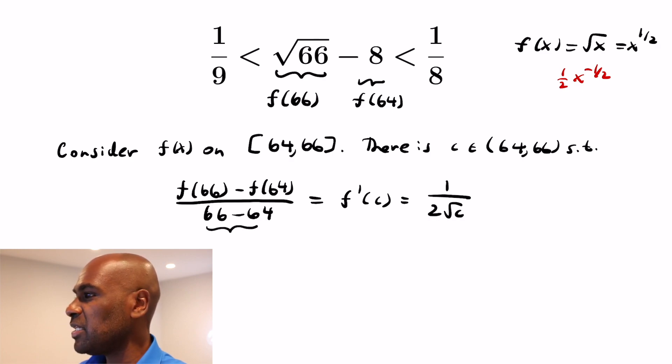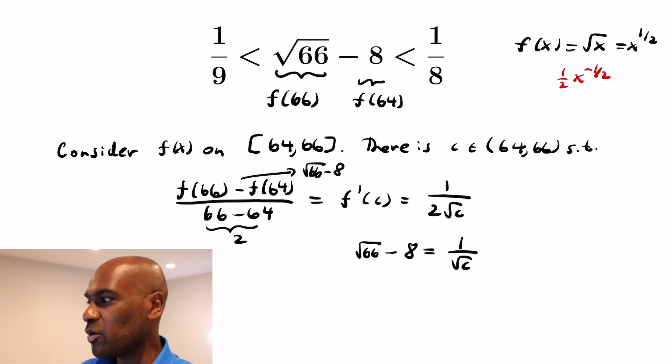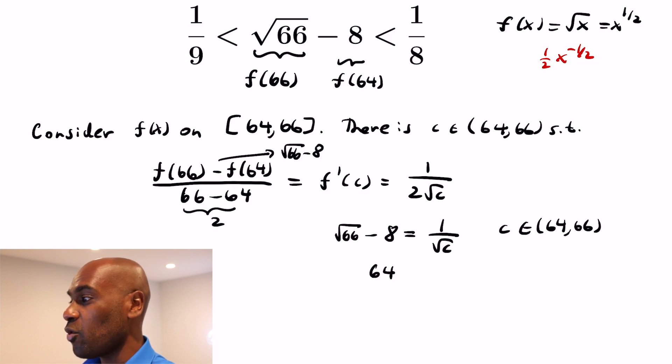Okay so let's piece all these things together. In the denominator we have a 2 in this fraction on the left. The numerator is the thing that we're actually interested in bounding above and below. It's √66 - 8. Now we're left with this 1/(2√c). But we know that this quantity √66 - 8 is going to equal 1/√c as a consequence because we have that 2 in the denominator. And we know that c itself is between 64 and 66.